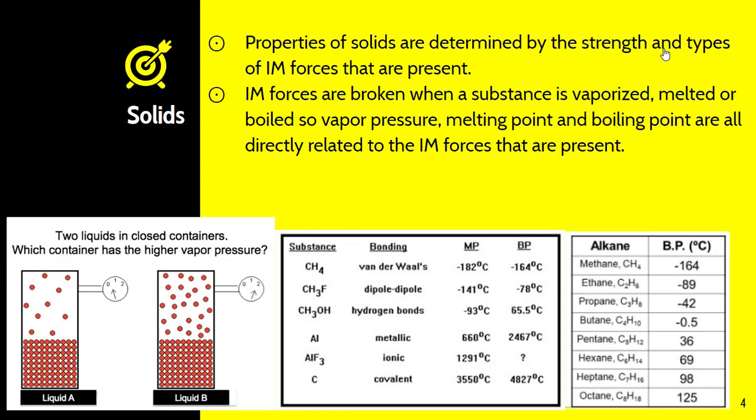Properties of solids are determined by the strengths and types of forces present. Intermolecular forces between molecules are broken when a substance is vaporized, melted, or boiled. So vapor pressure, melting point, and boiling point are all directly related to the intermolecular forces present. The stronger the intermolecular forces, the stronger those atoms or molecules are held together, and the more difficult it is to melt or boil it. As you see in the diagrams, weaker intermolecular forces have lower boiling and melting points, making it easier to convert into liquid and gas. Higher intermolecular forces mean atoms are closer together, making it harder to break molecules off and have them become a gas.